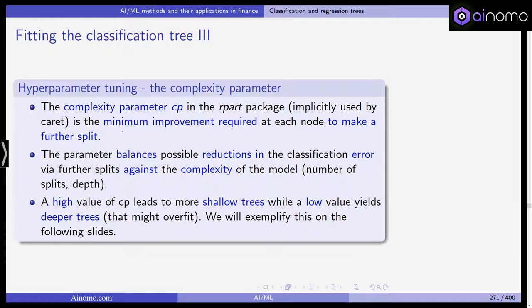This parameter balances possible reductions in the classification error via further splits against the complexity of the model, which is the number of splits or the depth of the tree. A high value of the CP, the complexity parameter, leads to more shallow trees, while a low value yields deeper trees that might overfit. On the following slides, we'll exemplify this so you can get an idea of what happens.